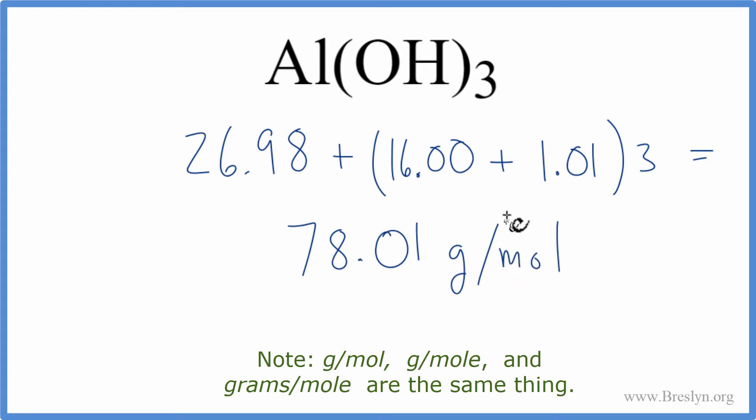Note that you might have gotten a slightly different answer if you went out further than these two decimal points. You might have got something like 78.00. Either way, this is how we find the molar mass for aluminum hydroxide, AlOH3.